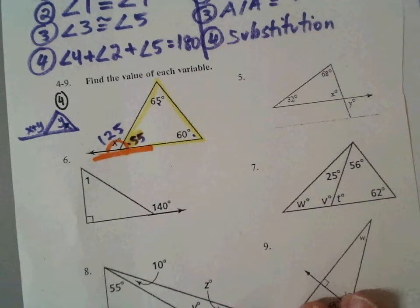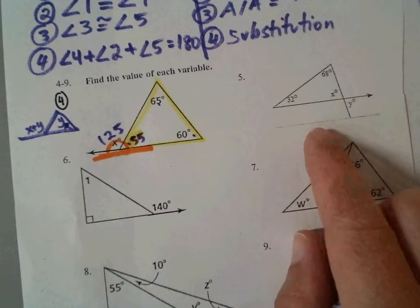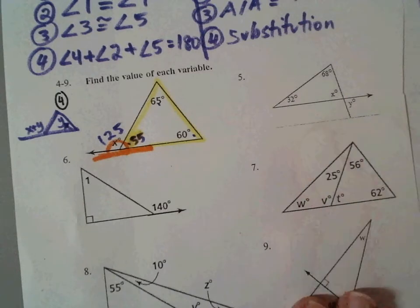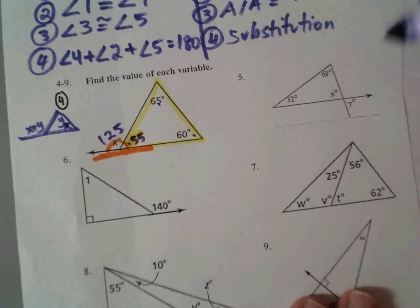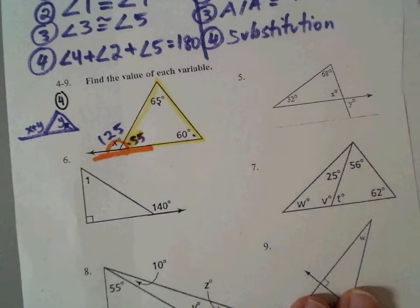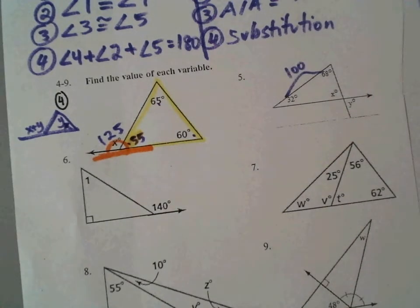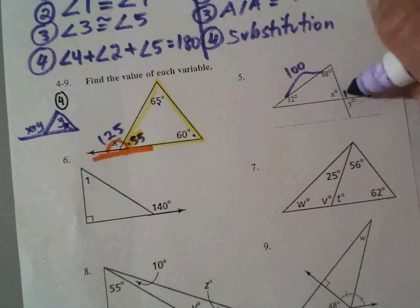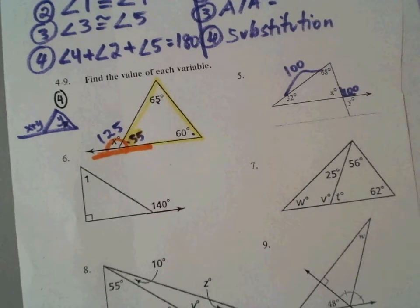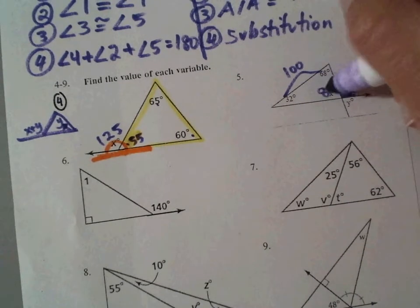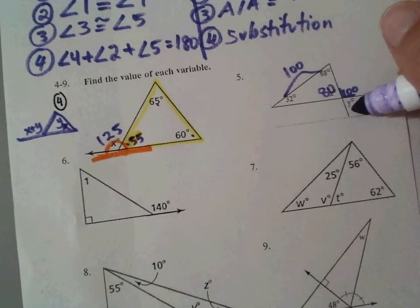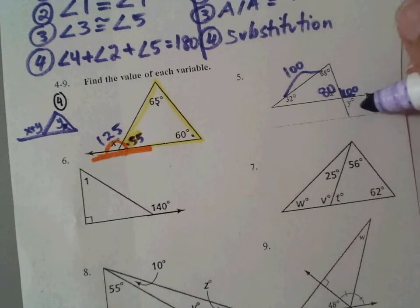All right, let's go to number five. What are you going to solve for first? 32 plus 68 gives you 100, so these two add up to 100. That means, using the little shortcut I just showed you, that means this is 100 out here. Does that help us in this one? So that means X is 80, and that means Y is 80, because it is what? What's the word between X and Y? Vertical.